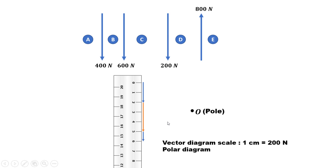Then D to E — this is the important point. D to E represents the 800N force. So 800N divided by 200 is 4cm. But it is acting in the upward direction, so we have to go in the upward direction 4cm, from 6 up to 2, going in the upward direction.